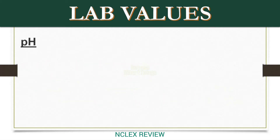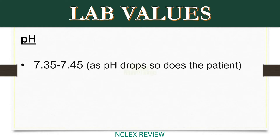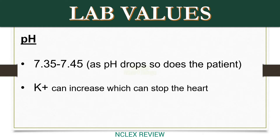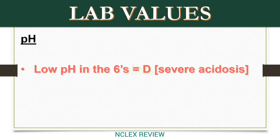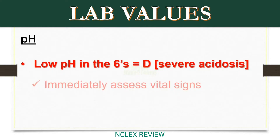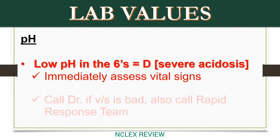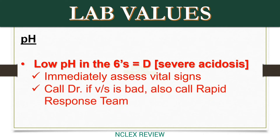pH normal range: 7.35 to 7.45. As pH drops, so does the patient — potassium can increase, which can stop the heart. Low pH in the 6s equals D — severe acidosis. Immediately assess vital signs. Call doctor if VS is bad; also call rapid response team.